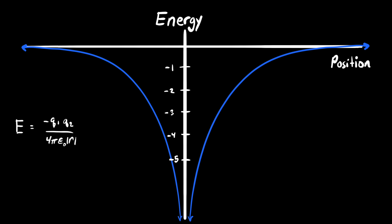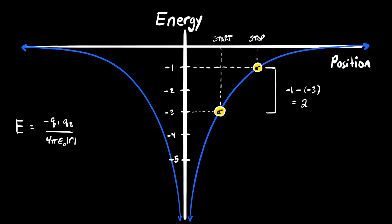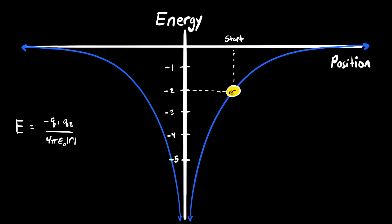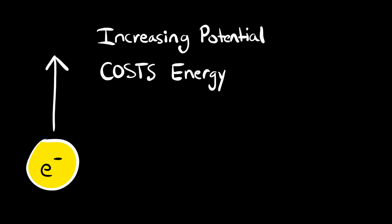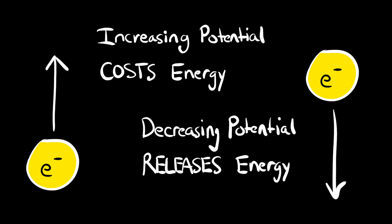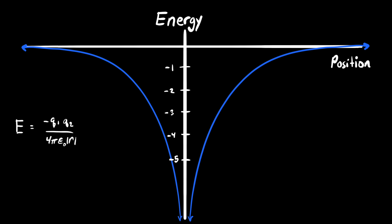This may seem confusing at first, but the whole purpose of this graph is to determine the difference in energy between two points. Moving an electron from a lower to a higher position on the graph increases its potential energy — the electron must absorb energy. Moving it from higher to lower decreases its potential energy — the electron releases energy. Increasing potential always costs energy; decreasing potential always releases energy. With this graph, we can easily calculate the energy to move an electron between any two points.